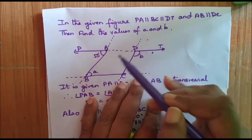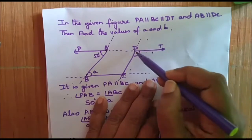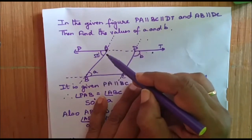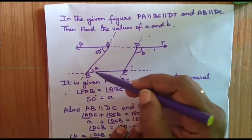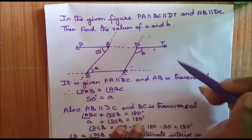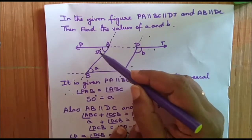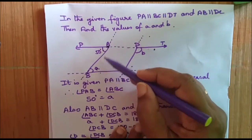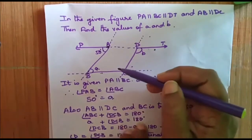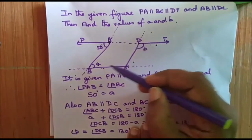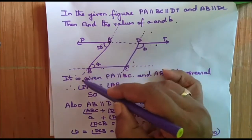We are given three parallel lines PA, BC, and DT, and also AB is parallel to DC. Since PA is parallel to BC and AB is the transversal, angle PAB will be equal to angle ABC because they are alternate interior angles. So A equals 50 degrees.